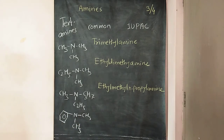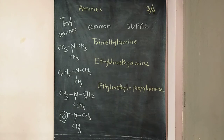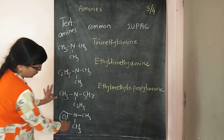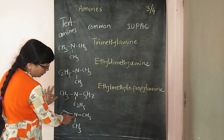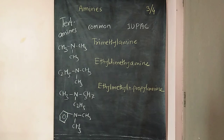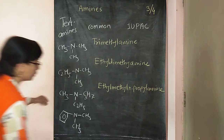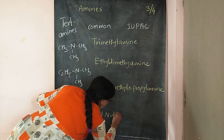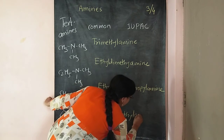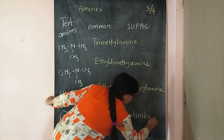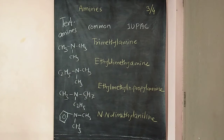The last member is interesting — it has one benzene ring, so it is the phenyl group, and two methyl groups attached. This is treated differently. In the common name system, the two methyl groups are considered attached to the nitrogen of aniline. So it is named N,N-dimethylaniline. The name ends with aniline since the parent is aniline.